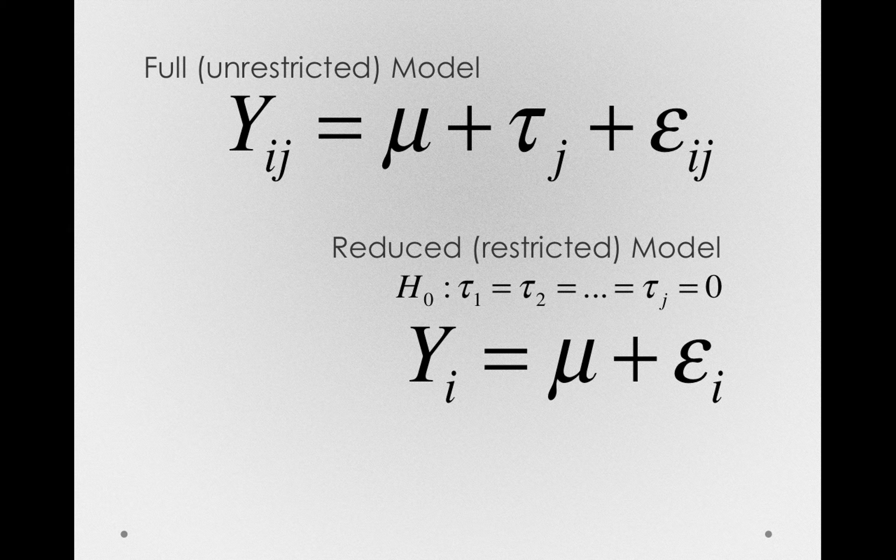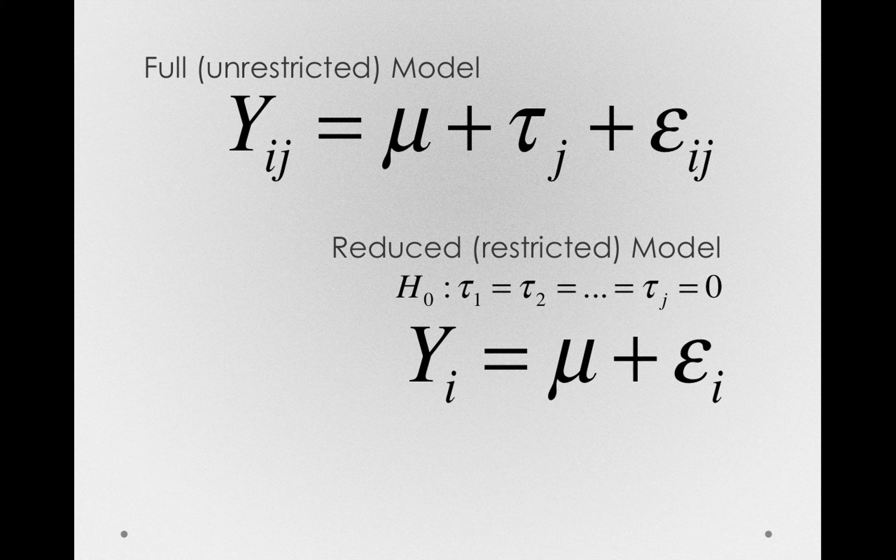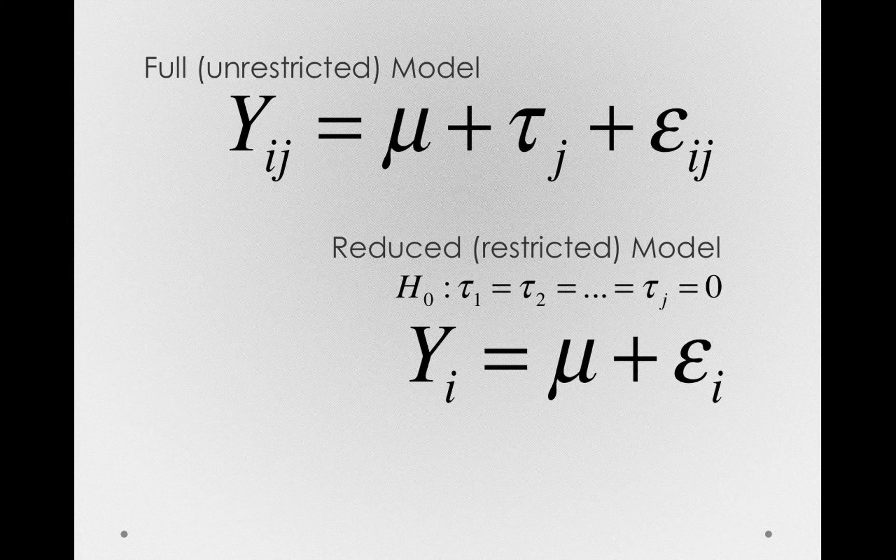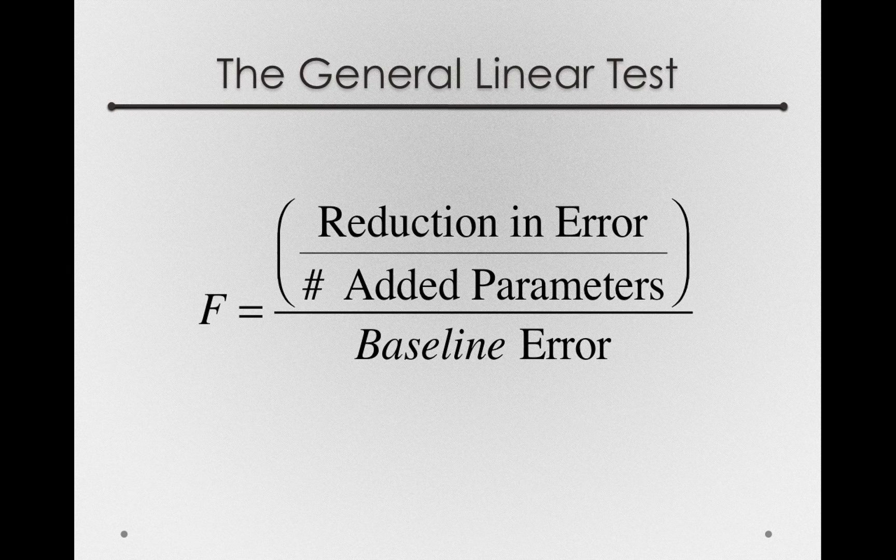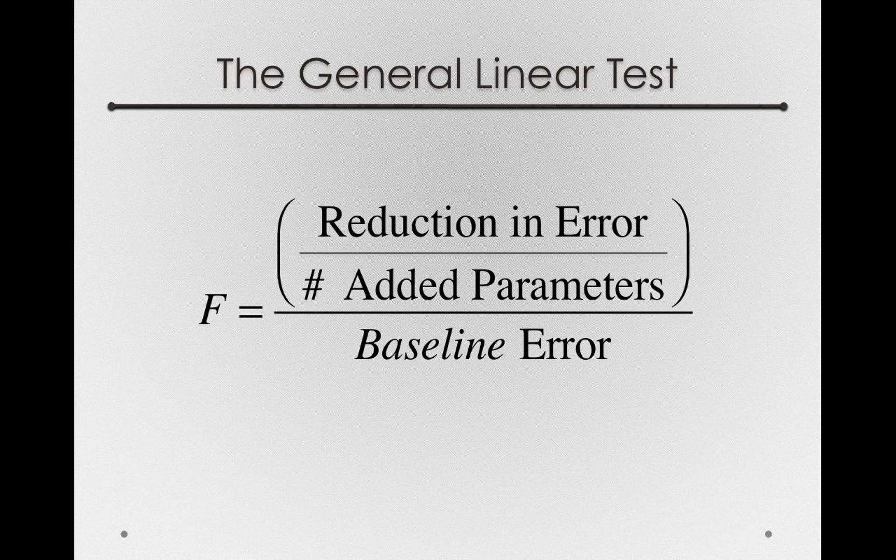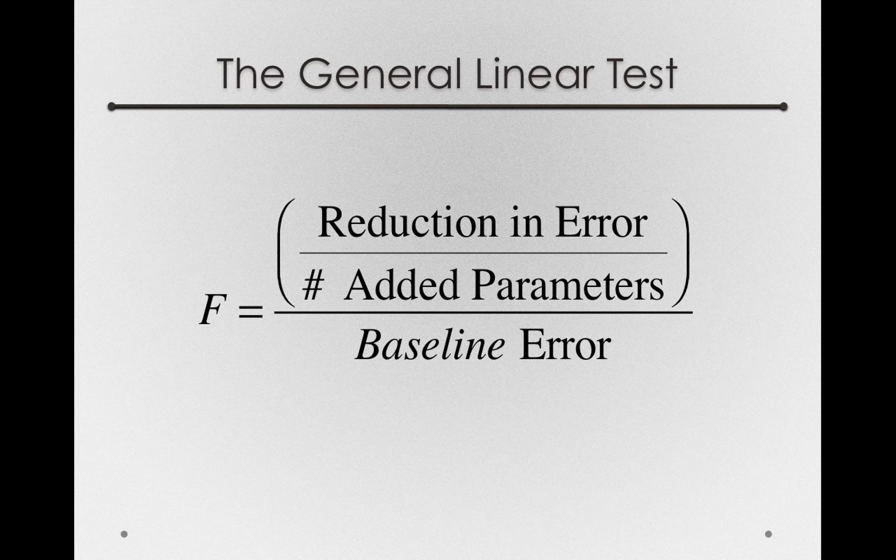But we need to know whether it fits better than simply chance alone would predict. Because if we simply add parameters to a model, it'll be easier for that model to fit the data. So what we're trying to determine is, per every parameter added, have we reduced error enough to think that it's more than simply sampling error alone?